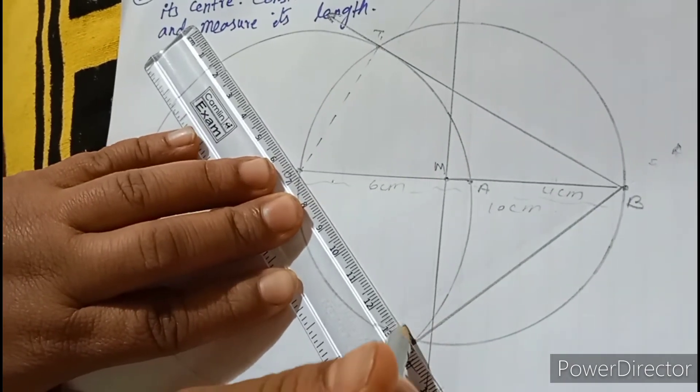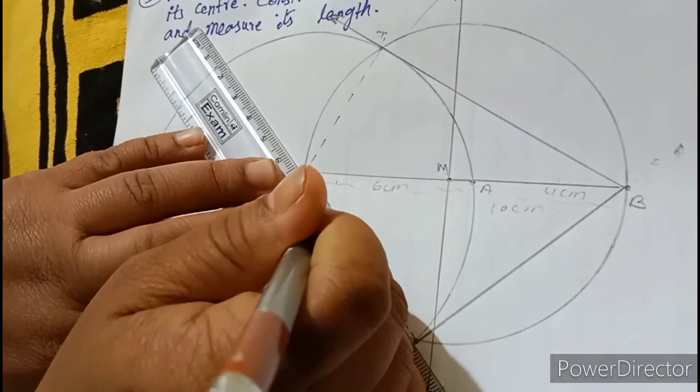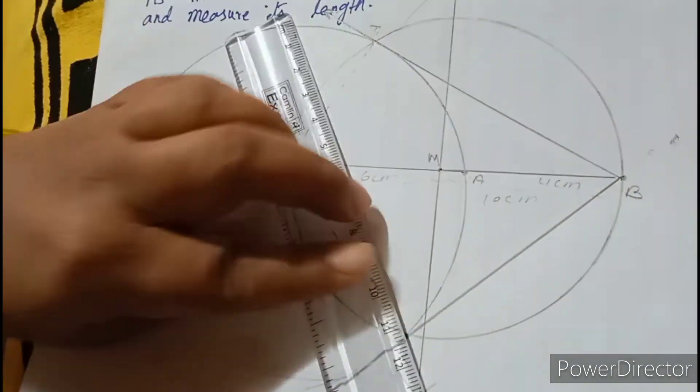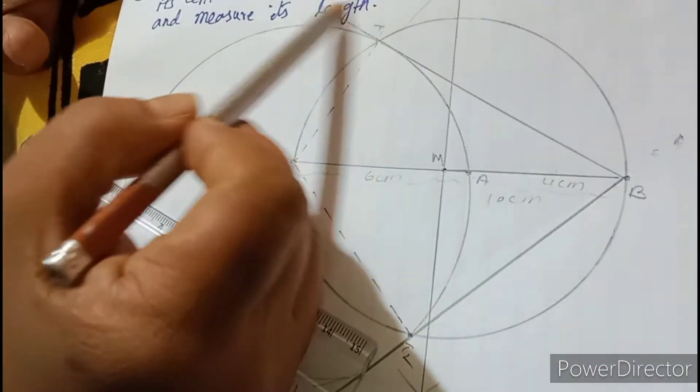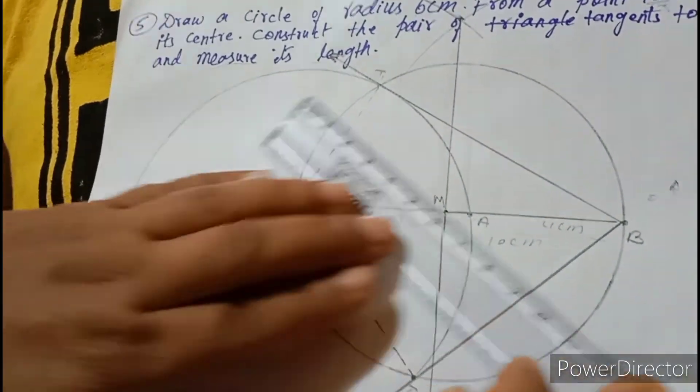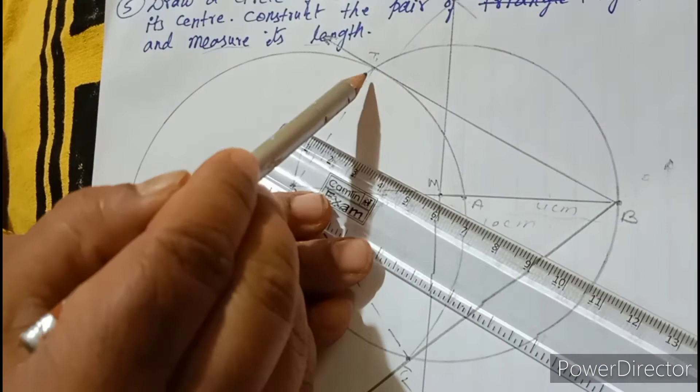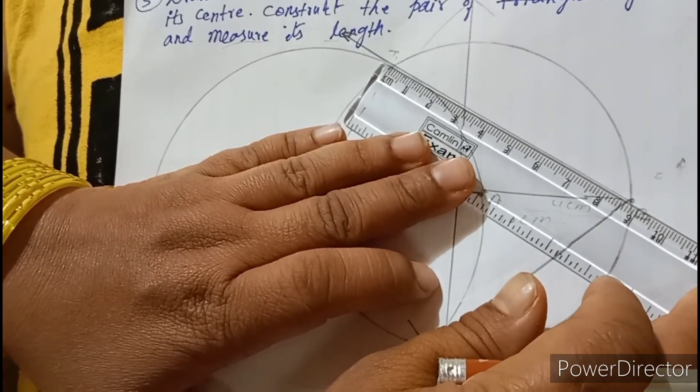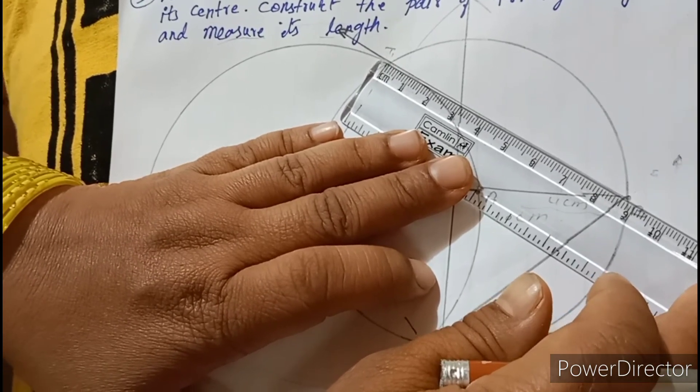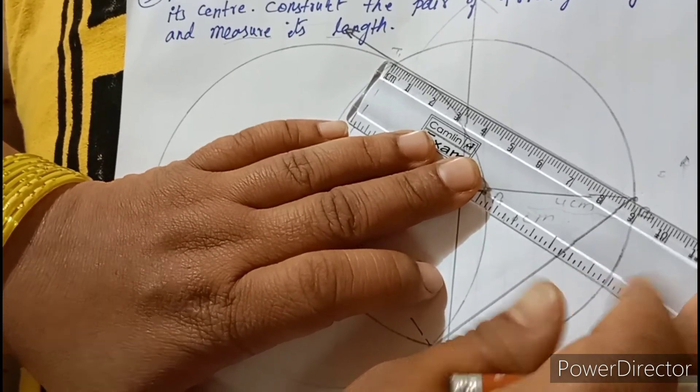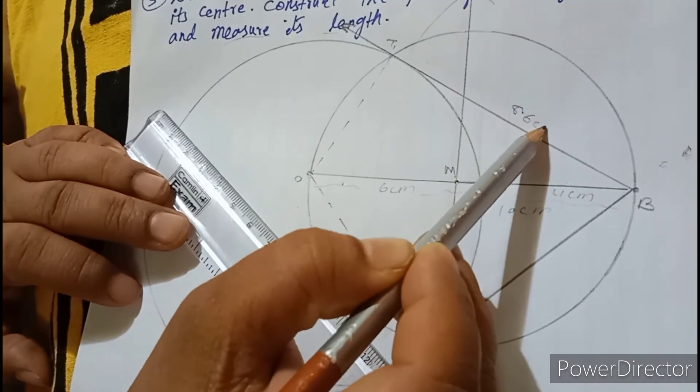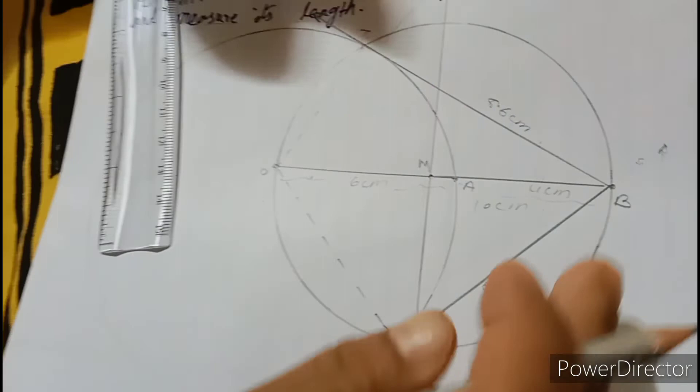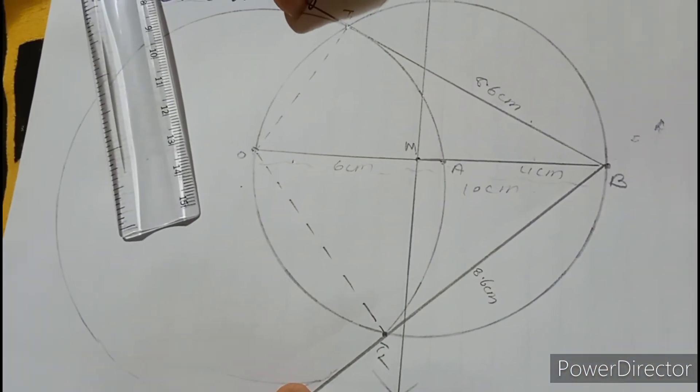If you have not understood any part, please rewind the video or pause it and construct simultaneously with me. Now, length of the tangent. You have to find out the measure of its length. So, see the length from here. From this point, you have to measure. From here up to B. So, it is nearest to 8.6 or 8.5. Clear? So, it is 8.6 centimeter. So, this is also 8.6 centimeter. Because two tangents are always equal.